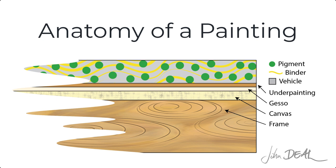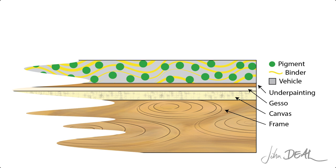At a basic level, paint consists of some pigment suspended in a vehicle like water, and a binder like egg, gum arabic, or acrylic resin. The binder holds it together when it dries, so it doesn't just flake off the surface.